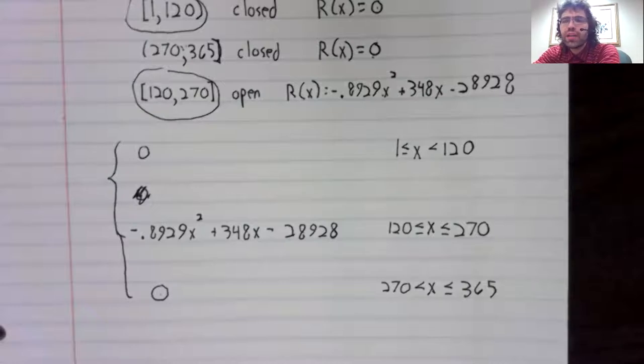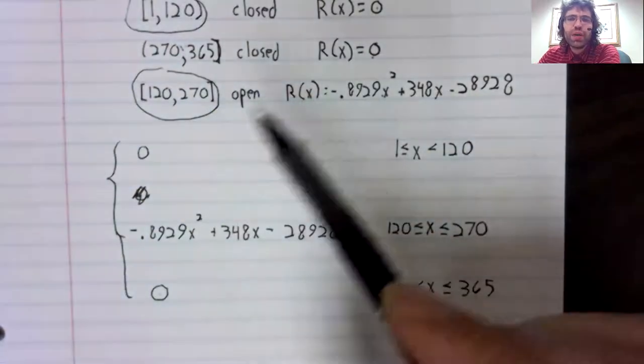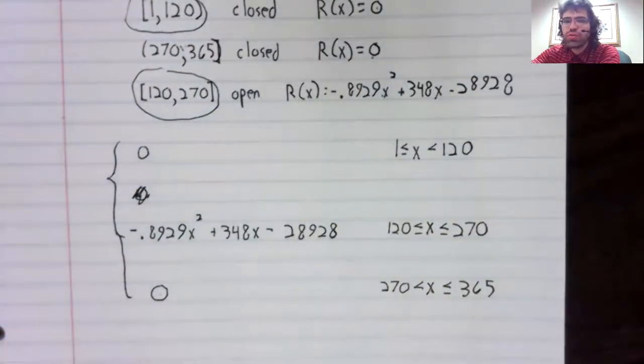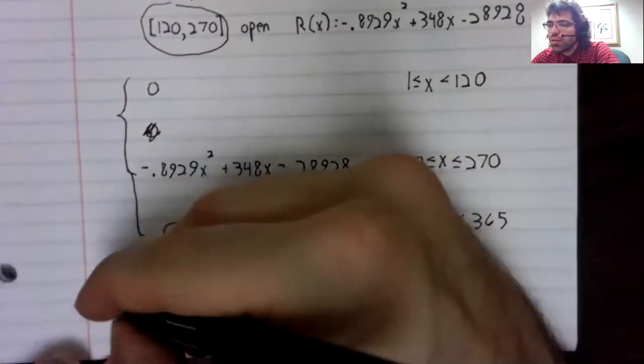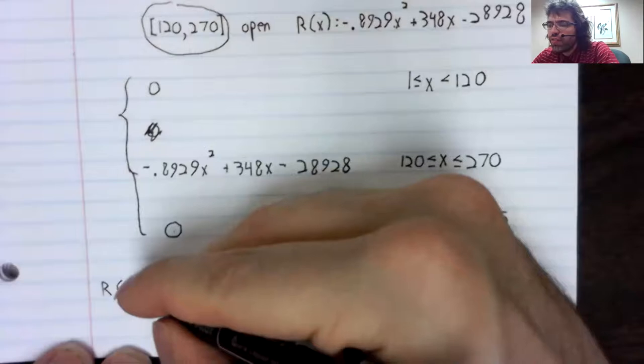One more very quick example of a piecewise defined function. No, actually, let me do an example with this example. First, say that I ask what's R of 42.